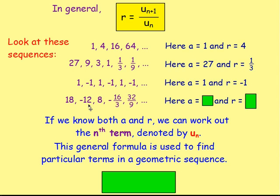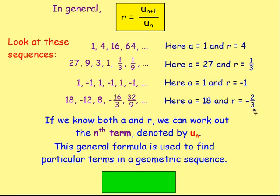Last one: you've got eighteen, negative twelve, eight, negative sixteen over three, and thirty-two over nine, and so on. The value of a is going to be eighteen — that is your first term. And the value of r is going to work out to be negative two-thirds. If you do negative twelve divided by eighteen, you've got twelve over eighteen, and that simplifies to two-thirds. So negative two-thirds is your common ratio. Again, you could also have done eight divided by negative twelve, or negative sixteen over three divided by eight. Whichever way you do it, you get the same common ratio.